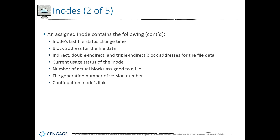File generation numbers, version numbers, and continuation inode links — all of the link components are stored in the inode. That way the data as a whole is contiguous. You know where all of the chunks of the data actually are.